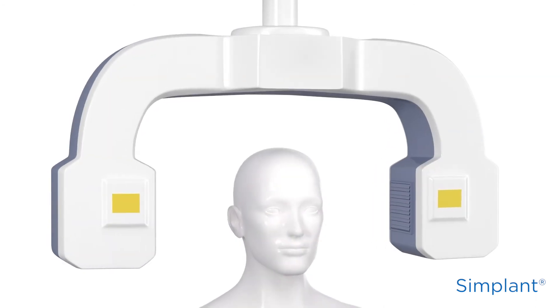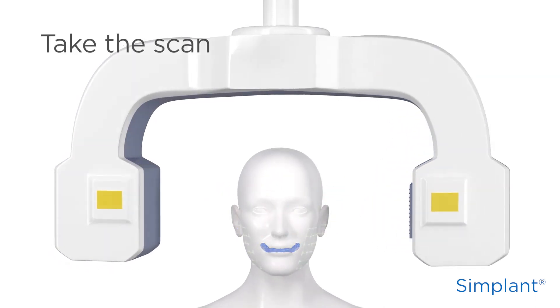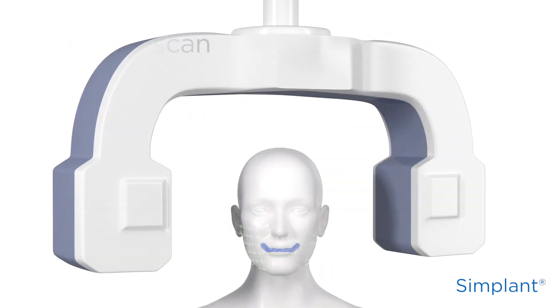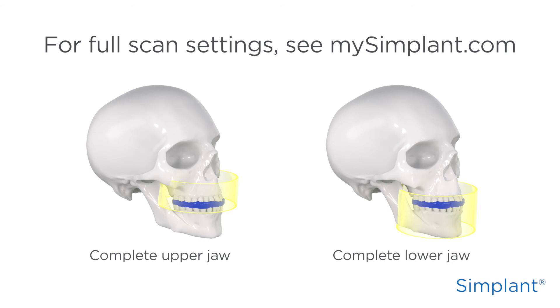Now that you've made the bite index, you can take the scan. Don't forget to scan the patient with the bite index. The complete upper or lower jaw, including the bite index, should be in the field of view. If you need more information on the scan settings, there's a small overview in mysimplant.com that you can use or send to your radiologist.